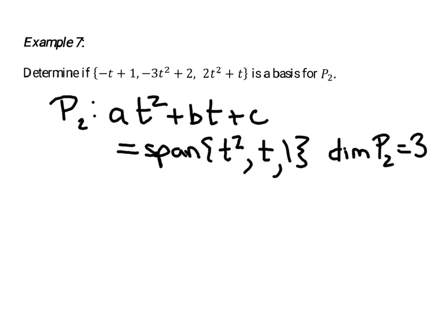There's a theorem just above this example in the notes that says any collection of 3 vectors - we've got a vector space of dimension 3 - any collection of 3 vectors that is either number 1, linearly independent, or number 2, spans P2.